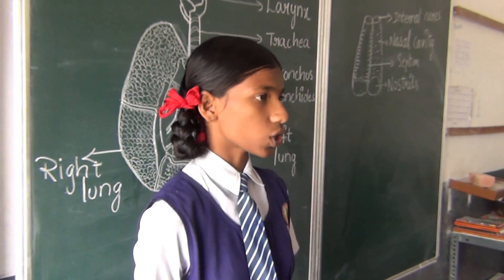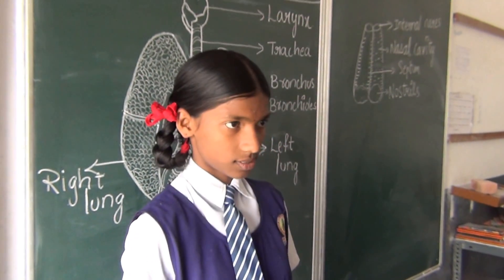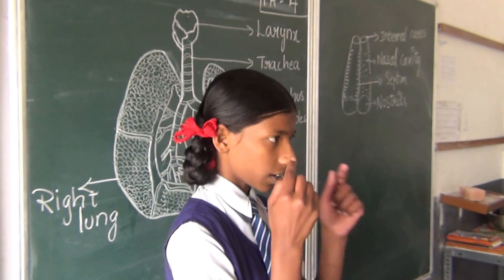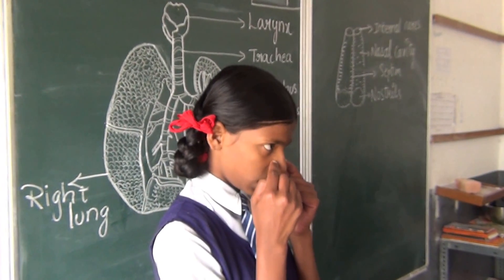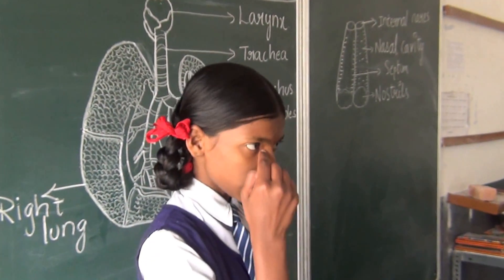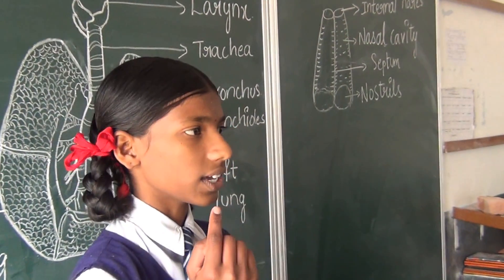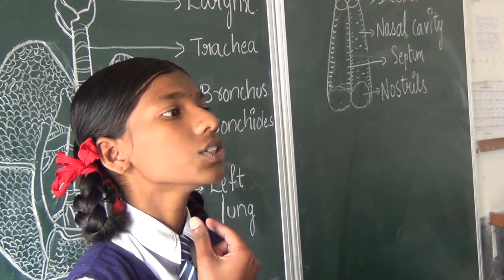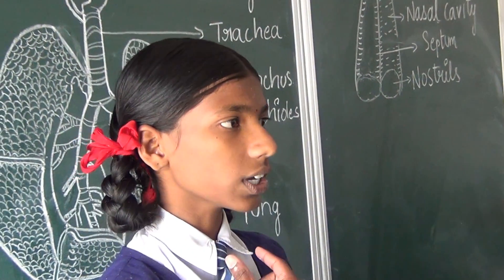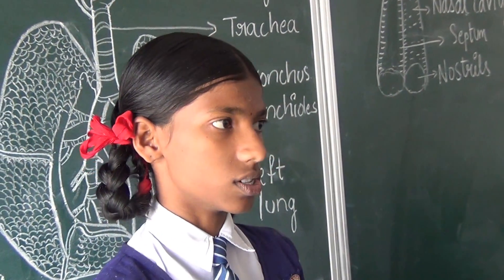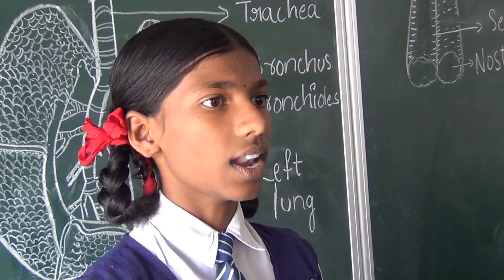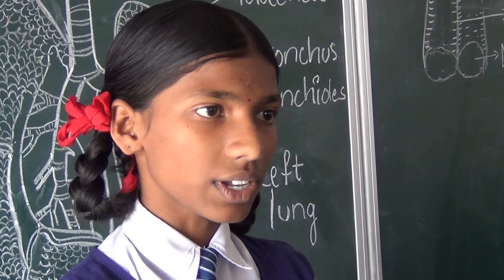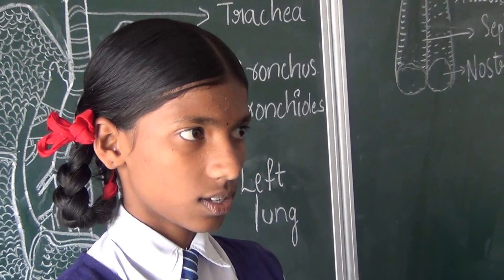This system consists of eight parts. They are nostrils, nasal cavity, internal nose, pharynx, larynx, trachea, bronchi and bronchioles, and the last one is lungs. Today we will discuss about each part.